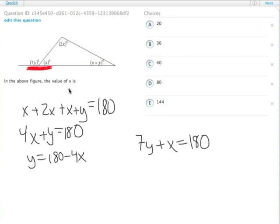We're trying to solve for x, so that's why I solved for y over here. We can then do x plus 7 times y, which is 180 minus 4x. That equals 180.